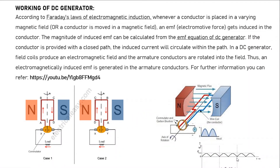Now we will see the working of this generator. According to Faraday's law of electromagnetic induction, whenever a conductor is placed in a varying magnetic field, or a conductor is moved in a magnetic field, an EMF gets induced in the conductor. Here you can observe there is a north and south pole in which the conductor is placed and it is moving inside the magnetic field.